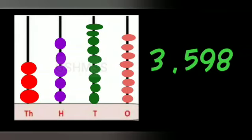Here I have shown how to draw the beads in the abacus. Three in the thousands place, so I have drawn three beads. Five in the hundreds place, so I draw five lavender color beads. Nine in the tens place, so I draw nine green color beads. Eight in the ones place, so I have drawn eight beads in the ones block.